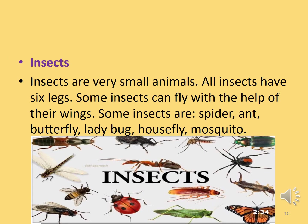Fifth is insects. Insects are very small animals. All insects have six legs. Some insects can fly with the help of their wings. A few examples of insects are spider, ant, butterfly, ladybug, housefly and mosquito. Here is a very interesting fact about ants — do you know how many types of ants there are? There are 2,000 types of ants on earth.